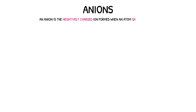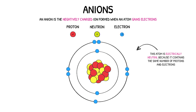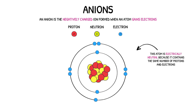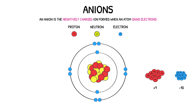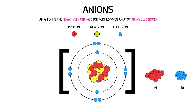An anion is the negatively charged ion formed when an atom gains electrons. Once again, this atom has no overall charge, and this is because of the equal number of protons and electrons. When this atom reacts, it will gain an electron to have a full outer shell of eight electrons. Once the electron is gained, there is now one more negative charge than there is positive. The atom becomes an anion with an overall minus-one charge.